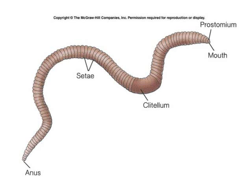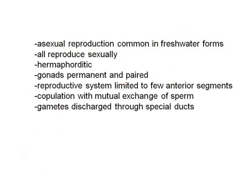Here's the earthworm, which you know fairly intimately by now. Take note of the prostomium which overhangs the mouth, the very characteristic clitellum, and — although you can't really see it in this diagram — the chaetae. Remember that in earthworms there are two pairs of chaetae on each side of the body: one pair up high and one pair down low. The digestive tract is complete with a mouth on one end and an anus on the other.